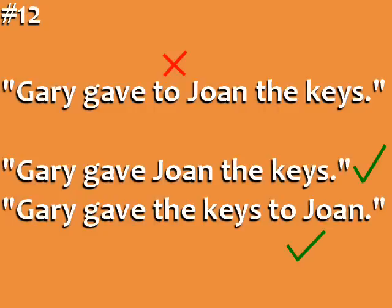Error number eleven: 'Gary gave to Joan the keys.' The verb 'give' has two objects: the indirect object, Joan, and the direct object, the keys. We can say this sentence correctly in two ways: 'Gary gave Joan the keys,' or 'Gary gave the keys to Joan.'